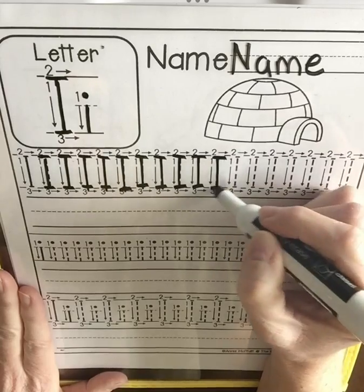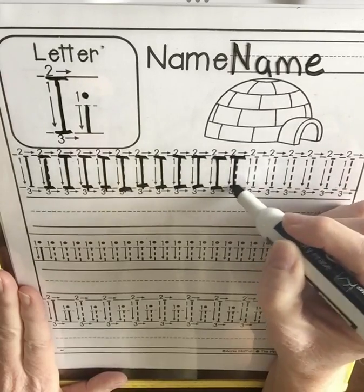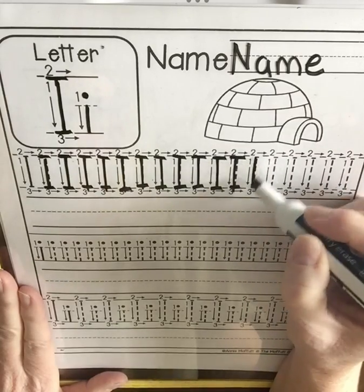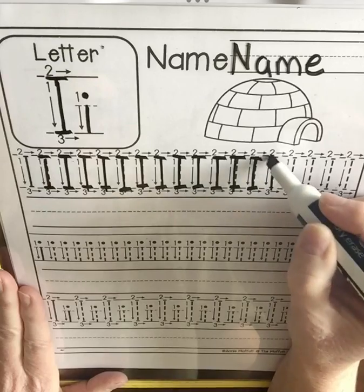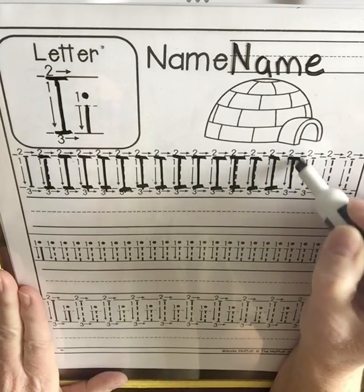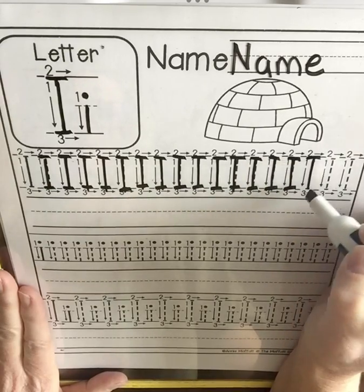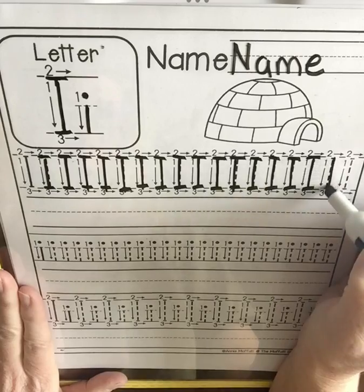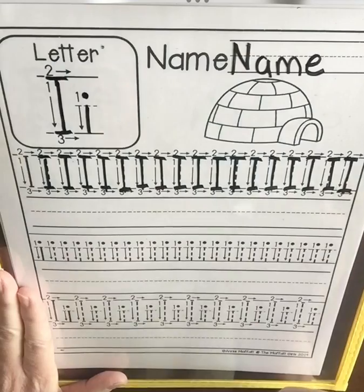There's a lot of them here, friends. I know, they look kind of squishy. All right, so we're almost done with tracing our capital I's. Now we're going to write them on our own.